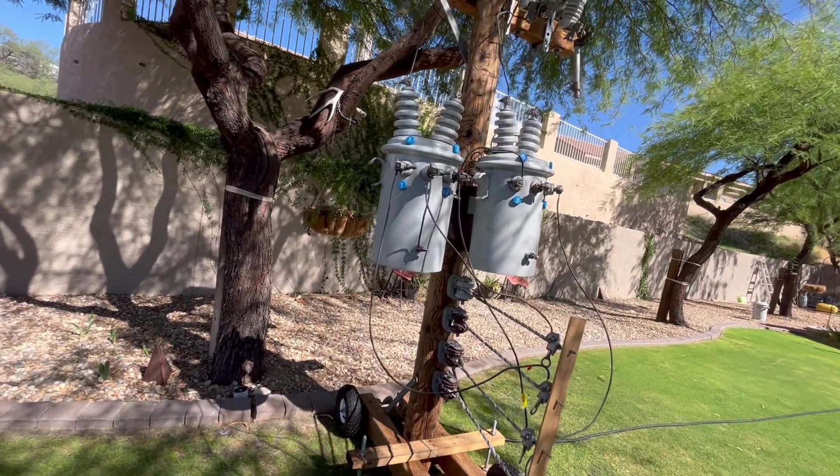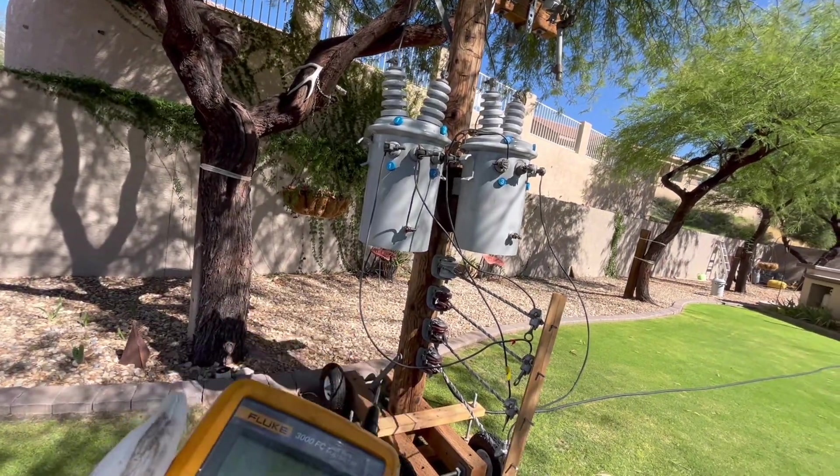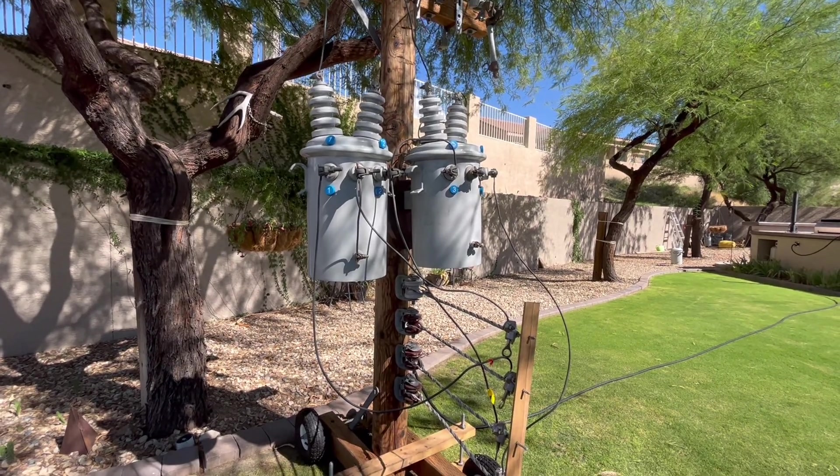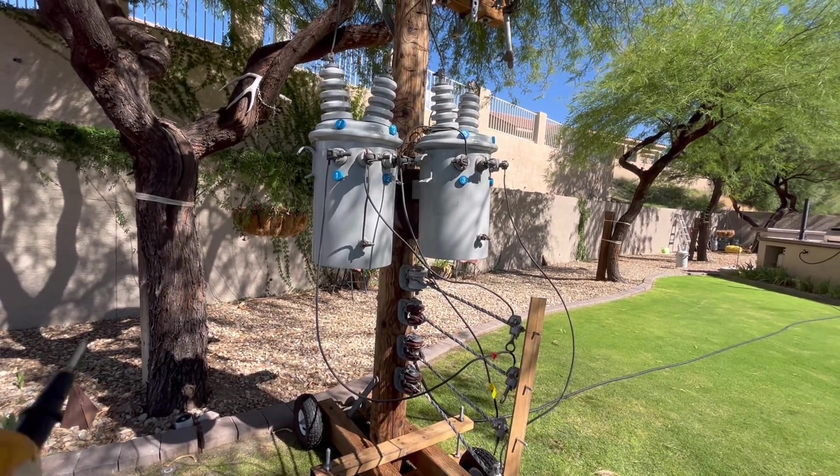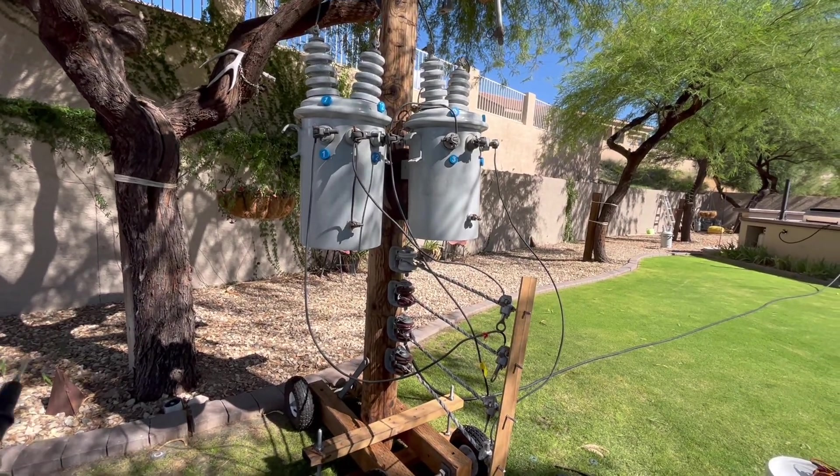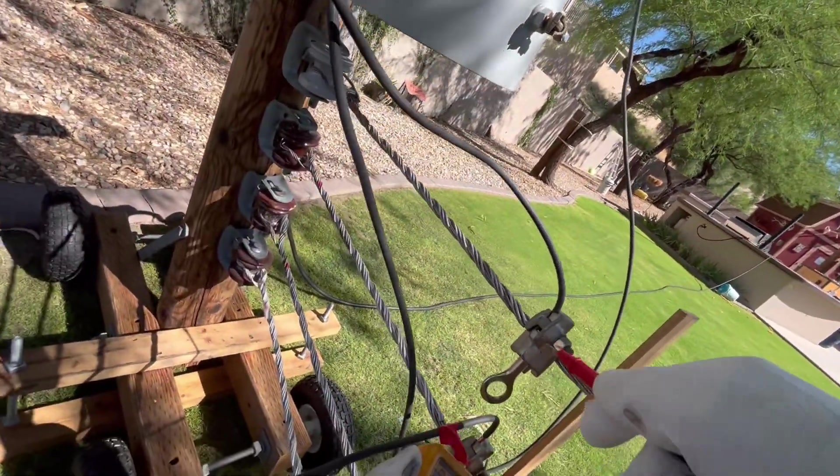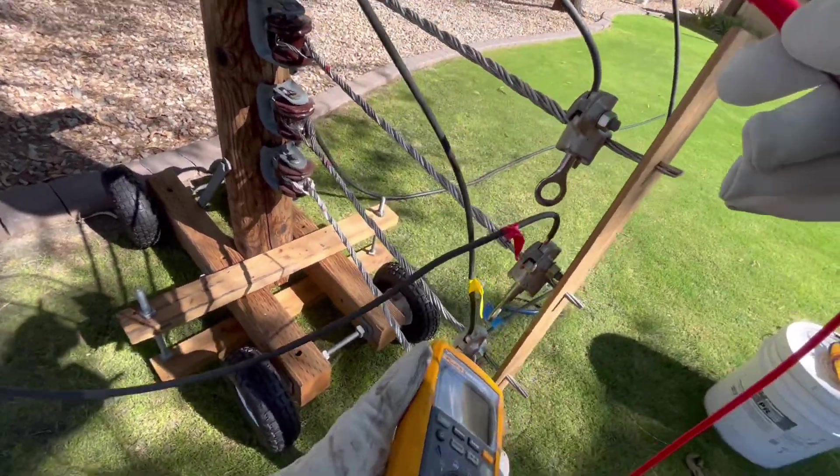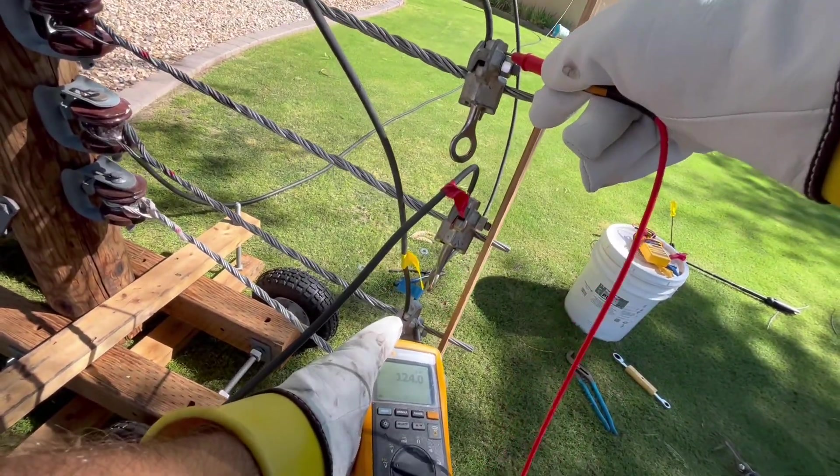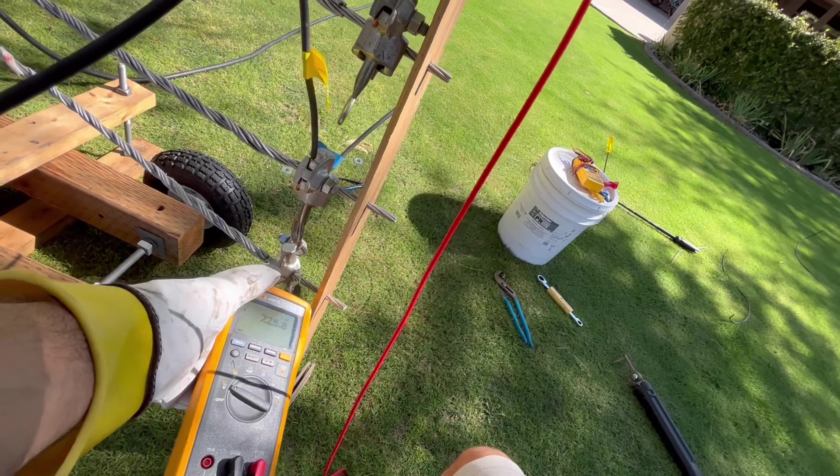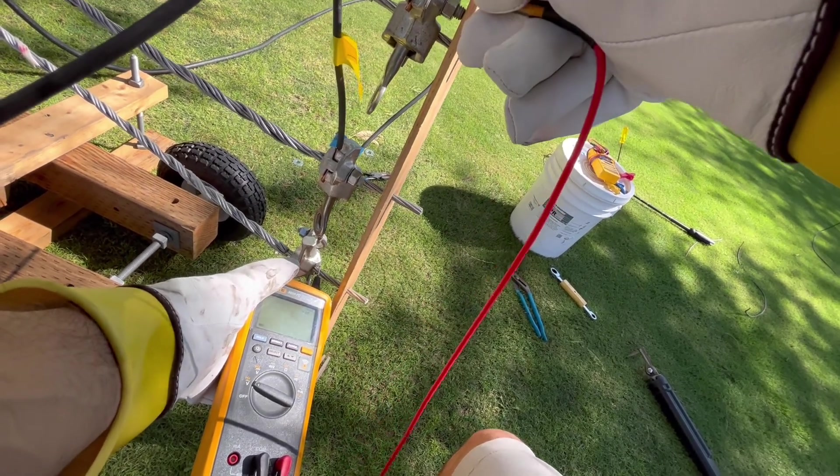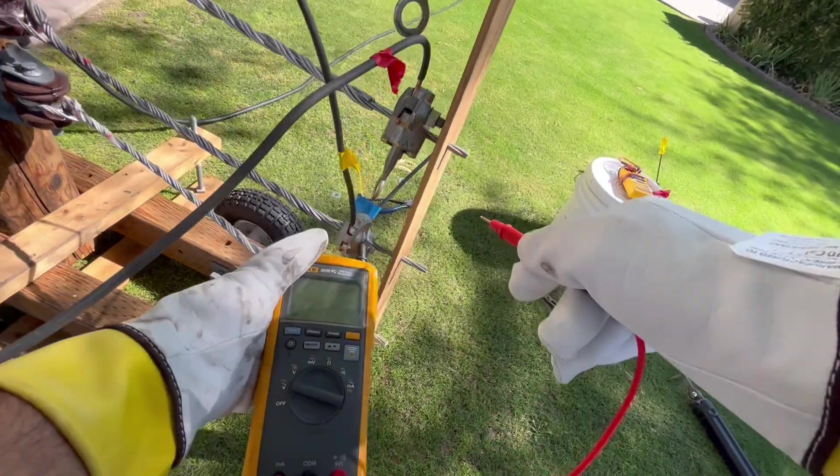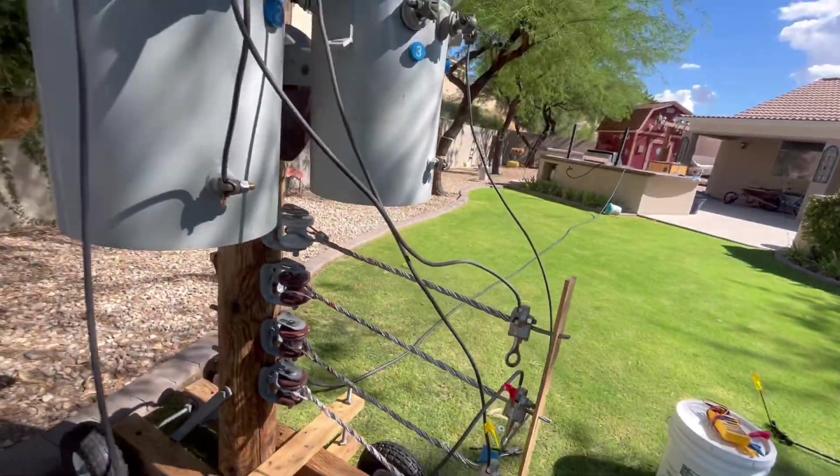The very last thing to do before we leave the job is just to verify voltage. The rule of thumb is, every time you operate those cutouts to energize a transformer or a transformer bank, you're going to want to check voltage. That way you know the customer is getting whatever the customer needs. 123. 124. 225. A little high, but... 247. 247. Good voltage.